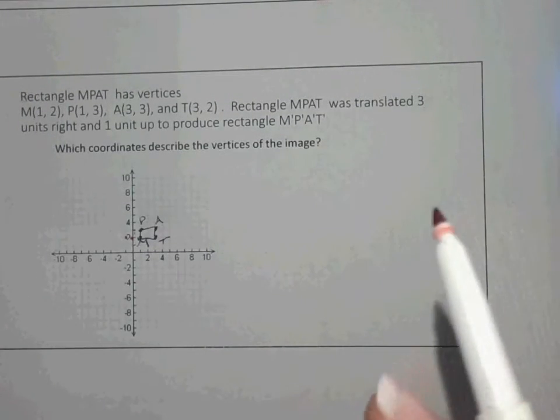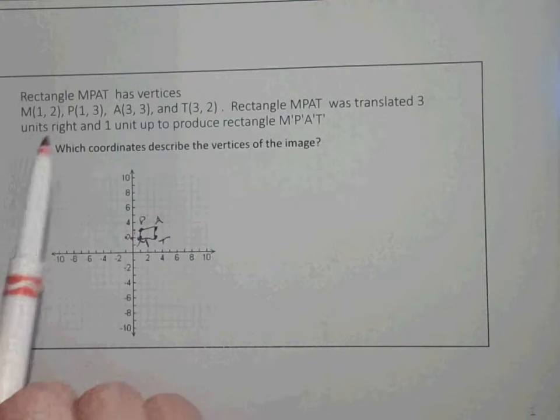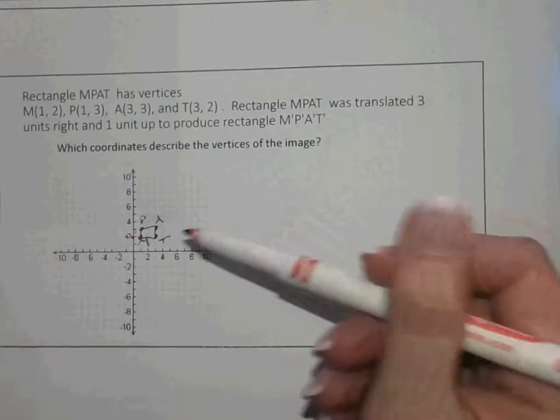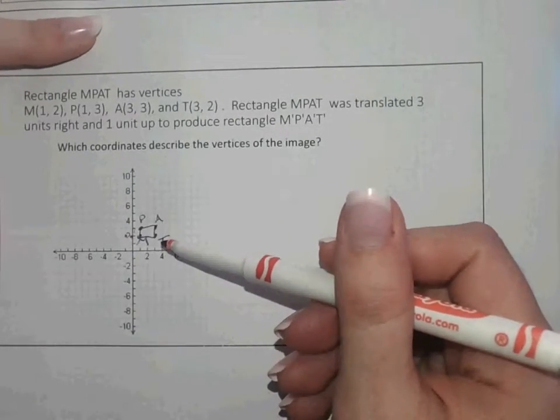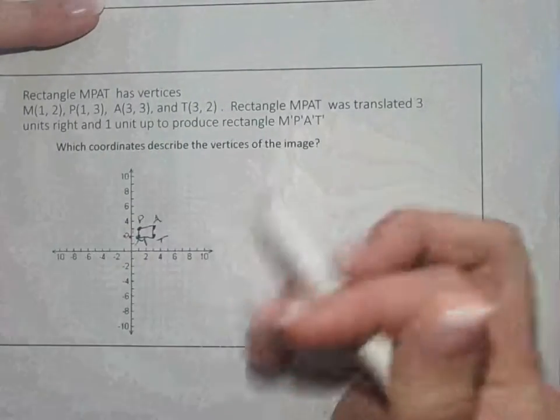Okay, so when I look at this, it says rectangle MPAT has vertices MPAT, and it tells you the ordered pair. So I'm going to go ahead and graph that for us. Rectangle MPAT was translated three units to the right.